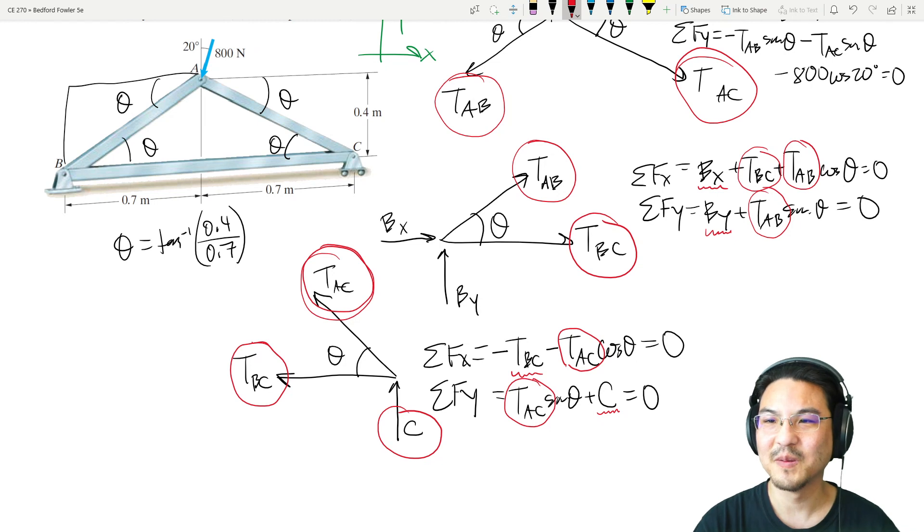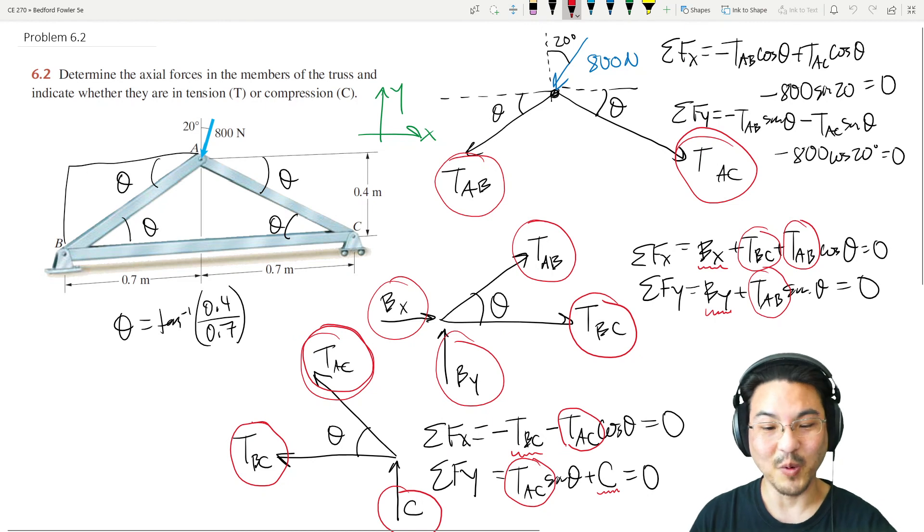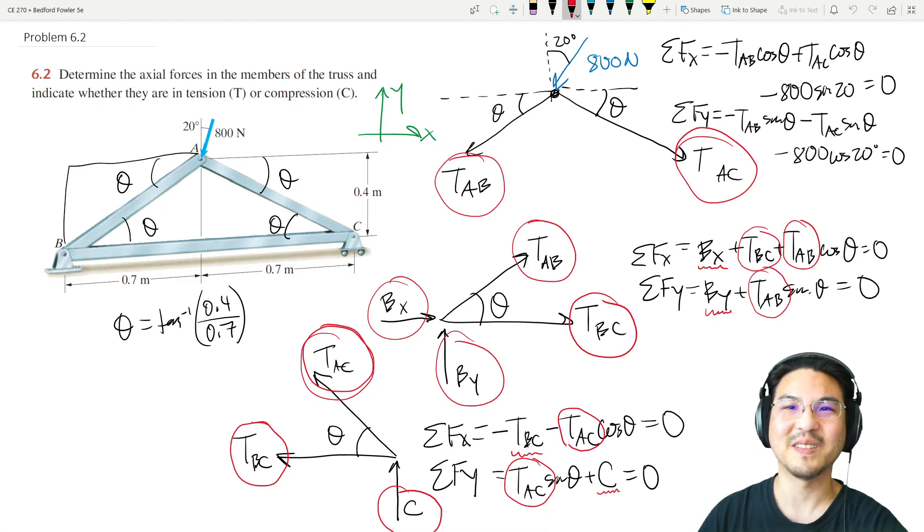We already know TAB, we know TBC already, we know TAB already, so only two unknowns. Just solve for those two unknowns, straightforward. So now we know everything. Let me know if you have any more questions about this one, and I'll see you in the next video.